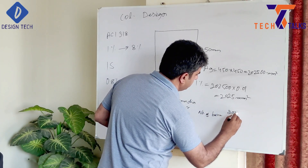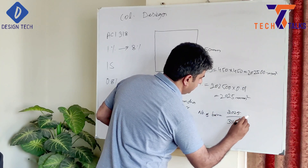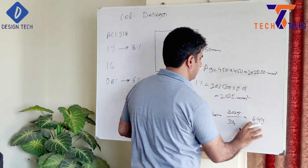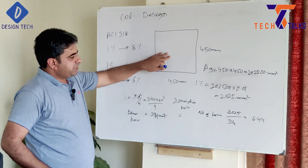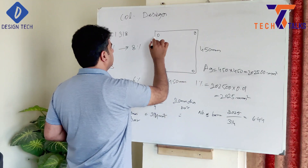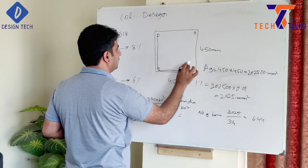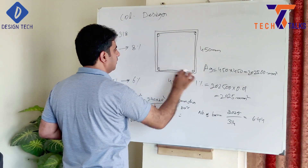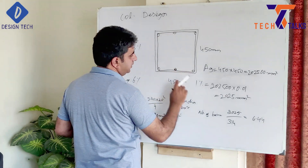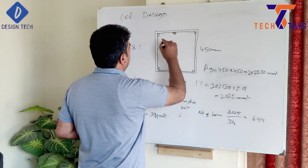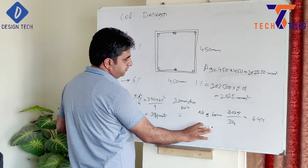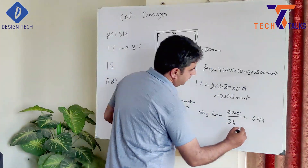Using 20 mm bars, the number of bars required is 2,025 ÷ 314 = 6.44. Since we have a square column, and completing six bars leaves a shortfall (6 × 314 = 1,884 mm² < 2,025 mm²), we must go for eight bars to satisfy the minimum reinforcement requirement.